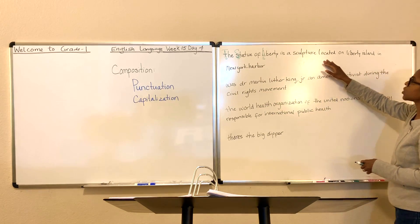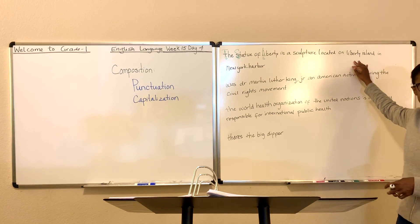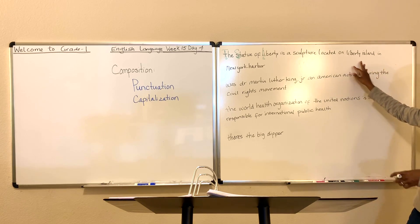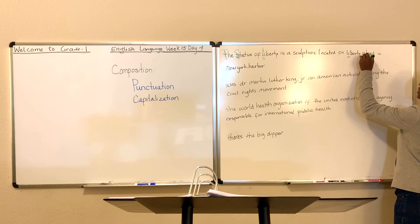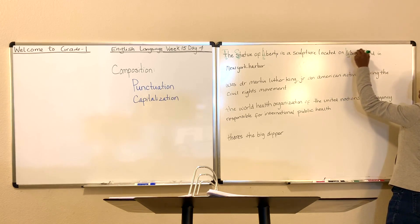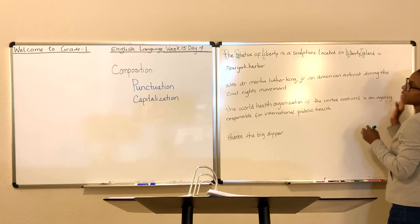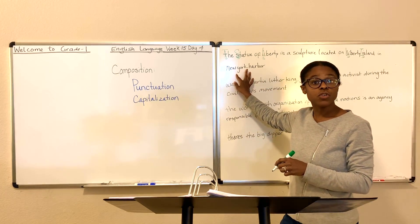This Statue of Liberty is a sculpture located on Liberty Island. Is that the name of a special place, a special island? Yeah. It is a specific, I shouldn't say special, it's a specific island. It has a name. That island is called Liberty Island and it's located in New York Harbor.